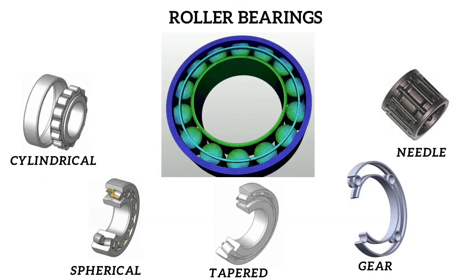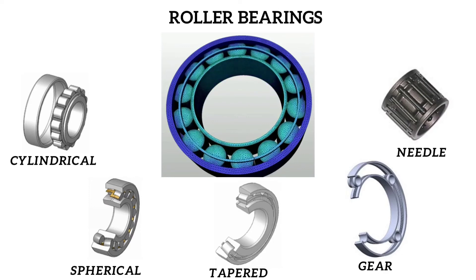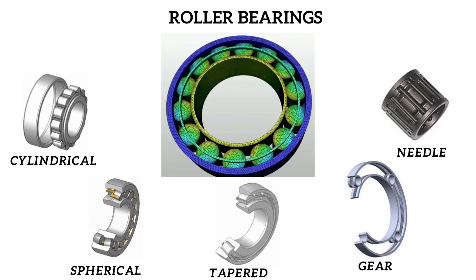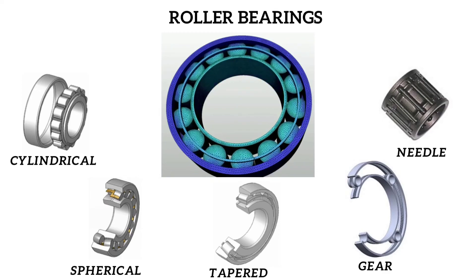Roller bearings: in a roller bearing, the rolling elements are cylindrical rollers, linearly tapered conical rollers, or rollers with a curved taper — so-called spherical rollers.